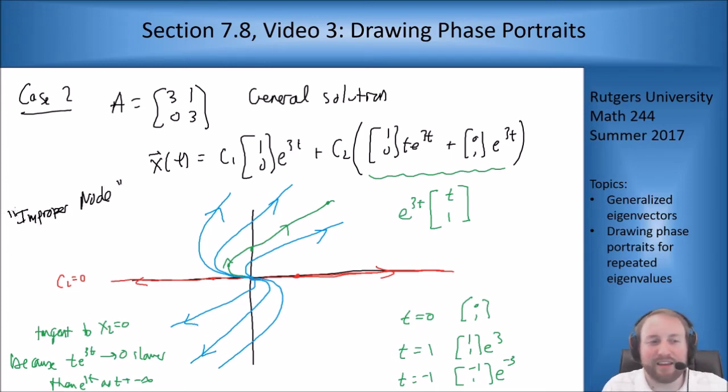This guy is what's called an improper node. Just like the spiral points you're doing a lot of guessing as to where things actually go. But if you can get the direction of the curves and which way it's going to bend as it comes into the center point, those are the important things you can get out of this phase portrait diagram. Obviously this one here is an improper node source. You can have an improper node sink as well if your eigenvalue is negative. You would have all these curves going into zero instead of coming out of zero.